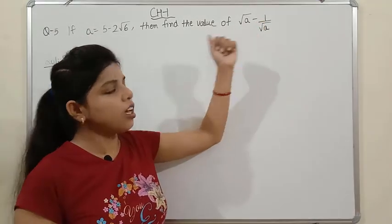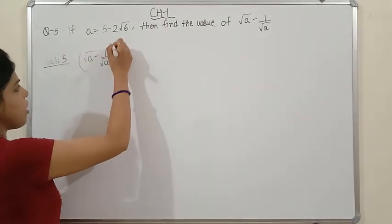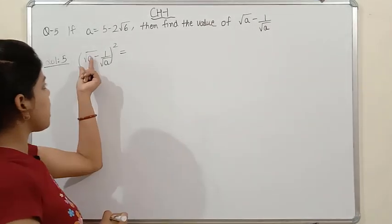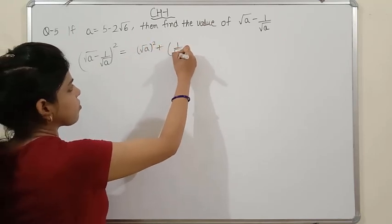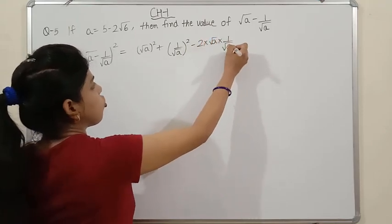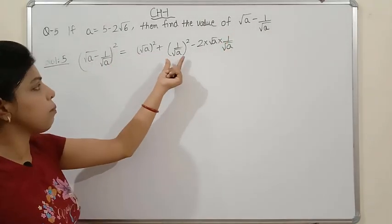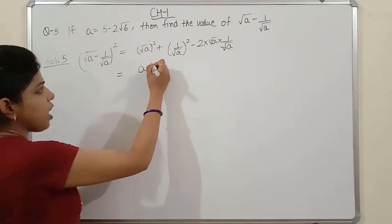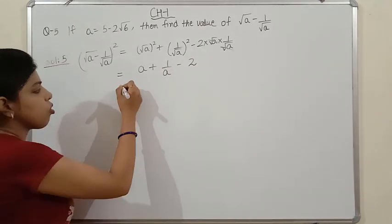Next question: we will not solve this directly. Instead, we take the square of (√a - 1/√a). Using the identity (A-B)² = A² + B² - 2AB, we expand: (√a)² + (1/√a)² - 2·√a·(1/√a) = a + 1/a - 2. So (√a - 1/√a)² = a + 1/a - 2.